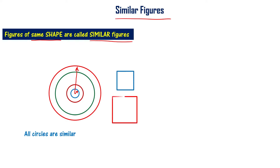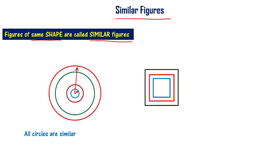Now let us look at squares. These are squares of different sizes. A square has four sides of equal length and four angles, all of which are 90 degrees. Since the shape remains the same, all squares are similar figures.